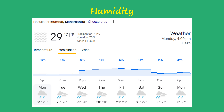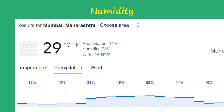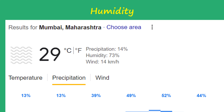In fact, if you search for a weather update online, like I did here for Mumbai, India, you'll see exactly what I mean. If you take a closer look, you'll notice that apart from temperature and other details, a humidity percentage is listed. But what exactly does this number mean? Don't worry, I'll break it down for you later in this video.